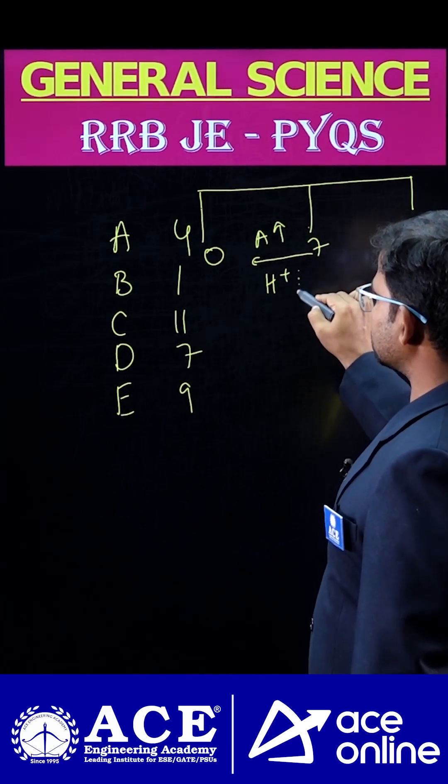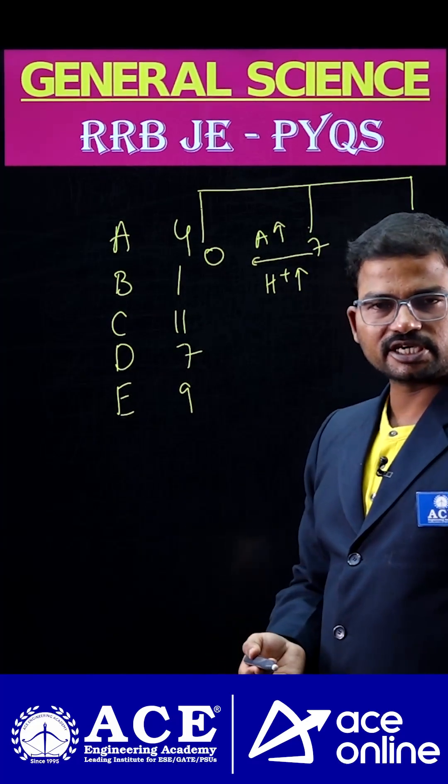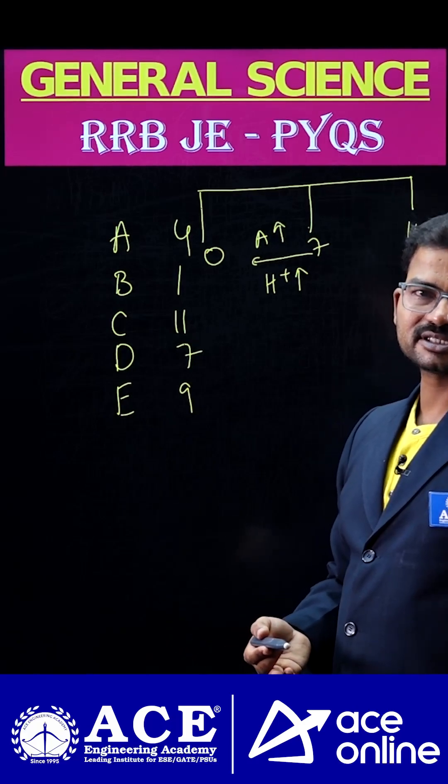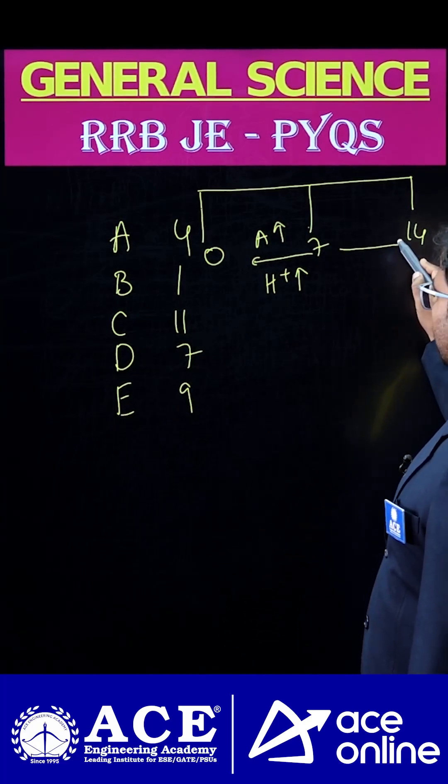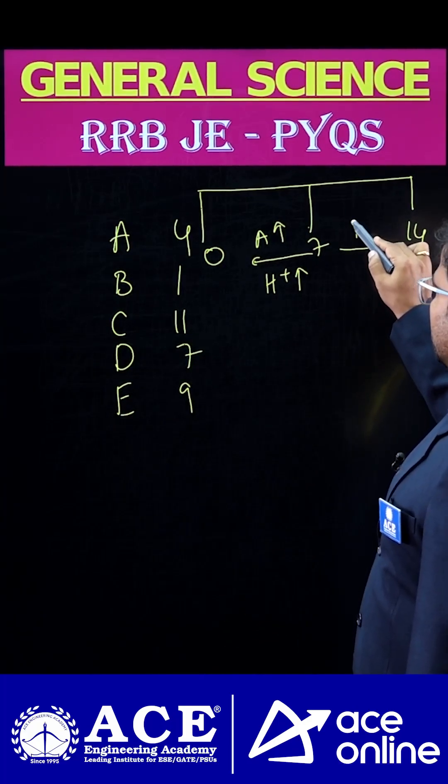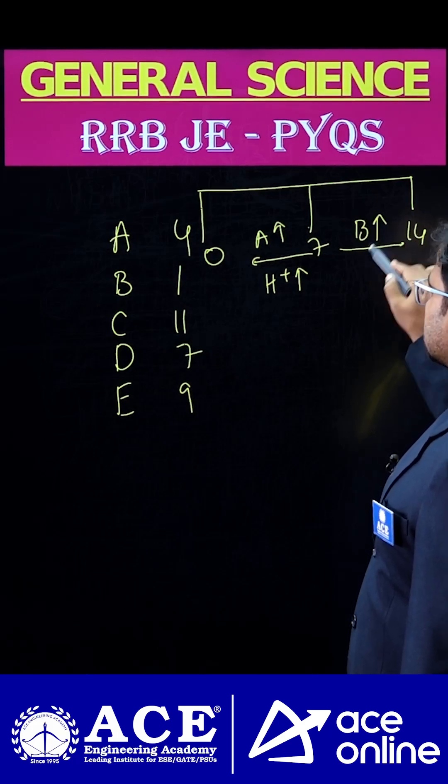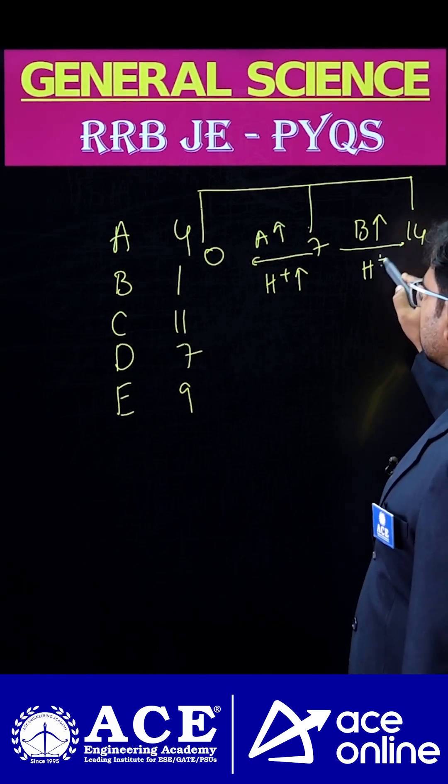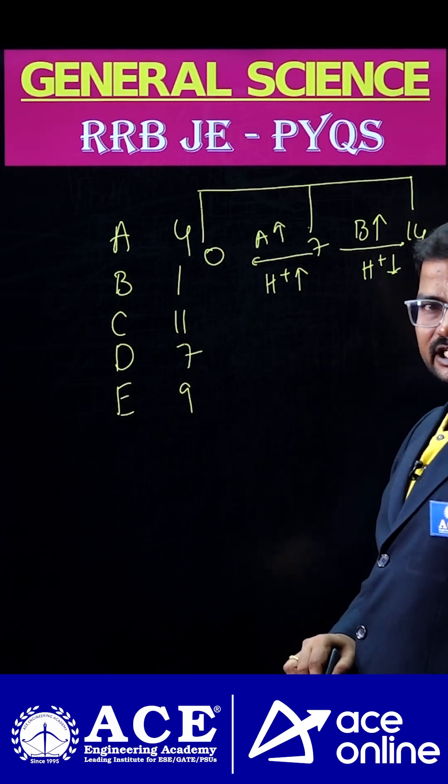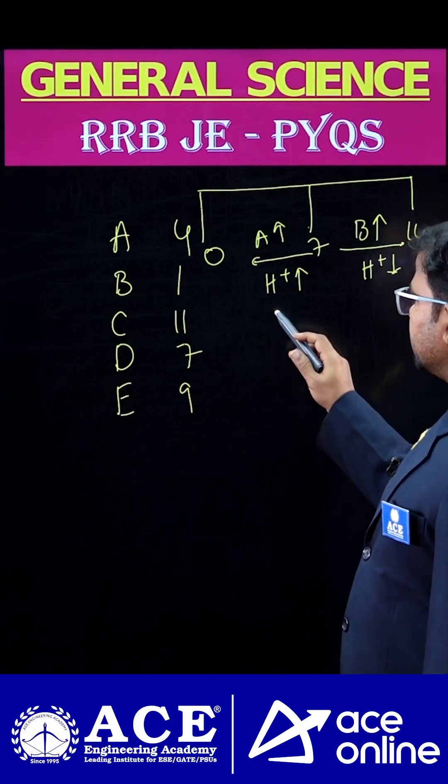From 7 to 14, basic nature increases, which means H+ ion concentration decreases. So here, which one is considered as a strong acid? B is the strong acid.